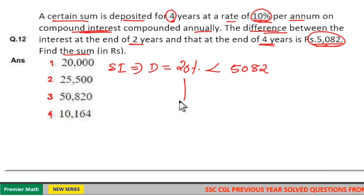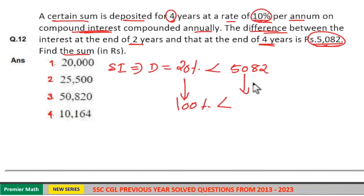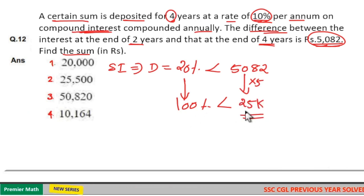That is, you have to find out the sum. Sum is equal to 100%. So 100% should be less than 5,082 into 5. I will calculate it as 5,000 into 5. That is 25,000. So your sum should be less than 25,000. Here less than 25,000 means option 1 is your answer. Only 1 is less than 25,000.